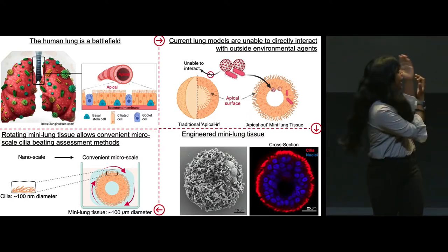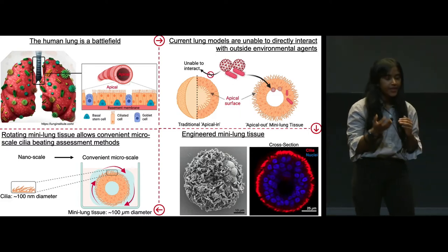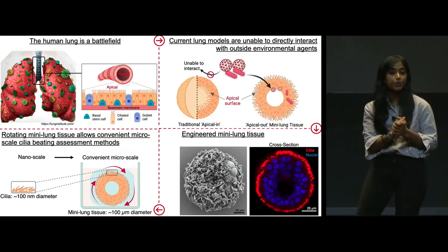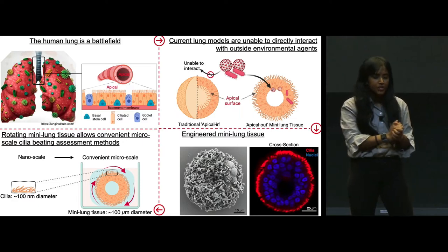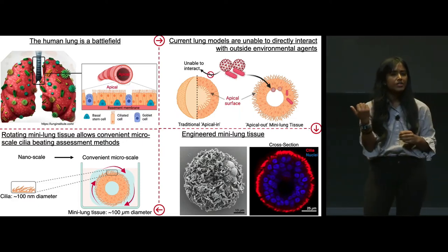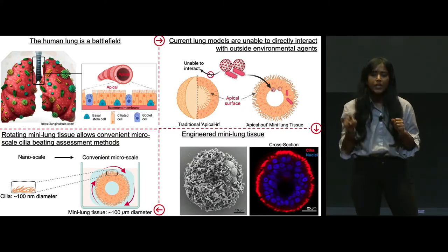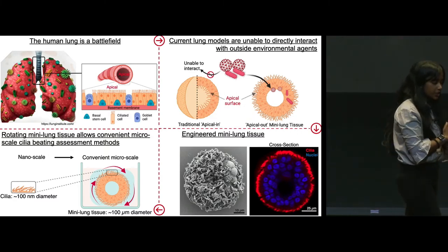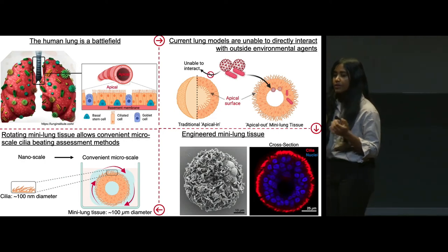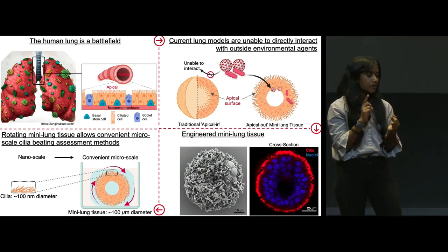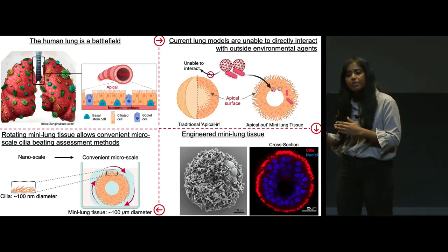So to address all these challenges in my thesis, I have engineered this mini-lung tissue in a dish with the apical surface facing outside, so it can directly interact with the respiratory pathogens and pollutants. As you can see, in this engineered mini-lung tissue, the ciliated cells are selectively present on the outside constantly beating, which also gives them this unique ability to rotate when embedded in a supporting material. Since this rotation of motion correlates to individual cilia beating, this can be used to transform current cumbersome, nanoscale, special equipment-demanding cilia beating assessment methods into more convenient microscale methods.